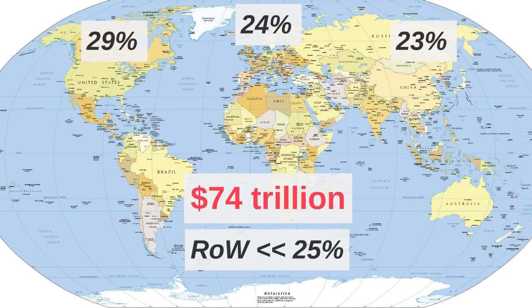A large proportion of the production in the rest of the world is actually embedded in global production networks that are centered in either North America, Western Europe, or East Asia.